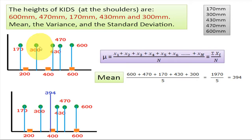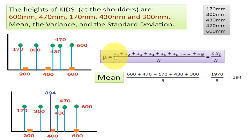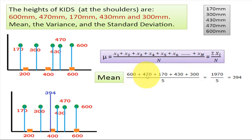The heights of the kids are: 170 mm, 300 mm, 430 mm, 470 mm, and 600 mm. We calculate the mean of the observations: mean μ = (x1 + x2 + x3 + x4 + x5) / N, that is summation of xi upon N. So mean = (600 + 470 + 170 + 430 + 300) / 5 = 394 mm.